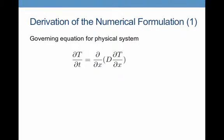So let's look at the physical system. In this case we have the heat diffusion equation: the partial of temperature with respect to time is equal to the partial with respect to x of D — the diffusivity — times the partial of T with respect to x. The diffusivity here includes the material properties that would normally appear in front of the partial temperature, partial time term.